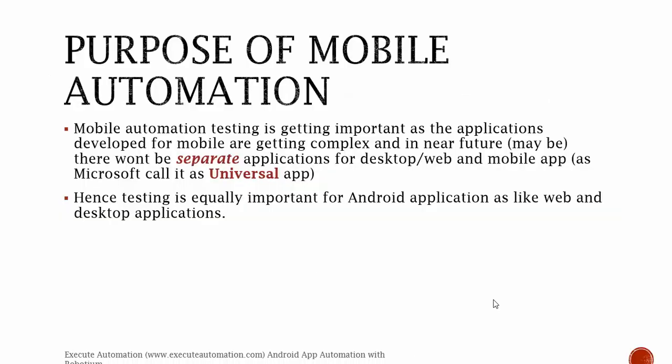Before starting this series and before starting mobile automation itself, we first need to understand the purpose of mobile automation testing. Mobile automation testing is getting important as application development for mobile is getting complex. In the near future, maybe there won't be separate applications for desktop, web, and mobile, as Microsoft currently calls it a universal app — where applications developed for one platform can support any number of platform types.